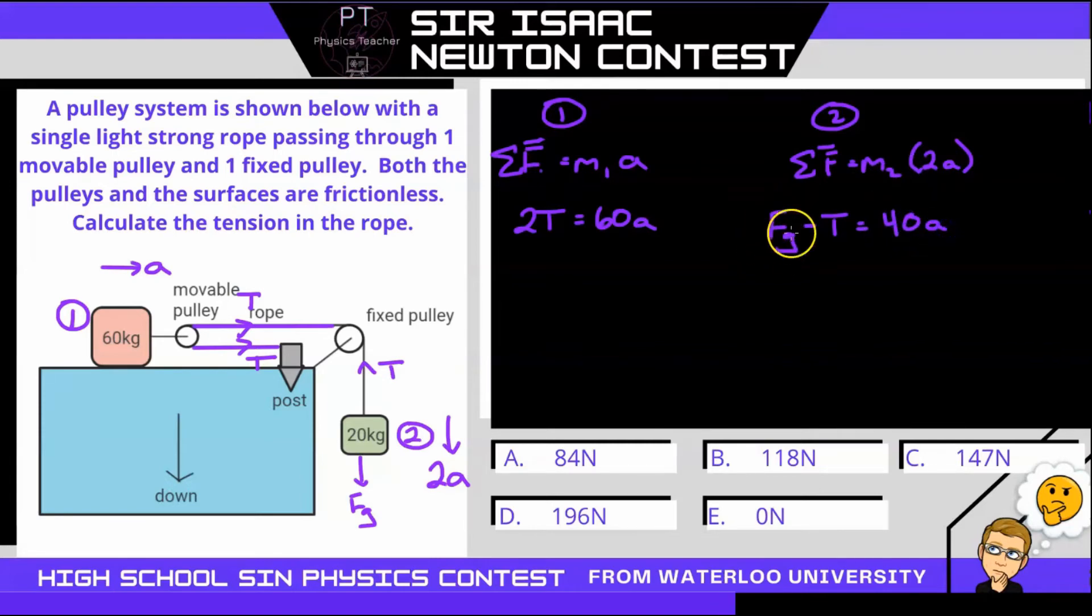Alright, well, force of gravity is just mass times our gravitational field strength, and its mass is 20. So to figure out what A is, I can simply write from equation one, that A, if I divide both sides by 60, we get tension over 30.